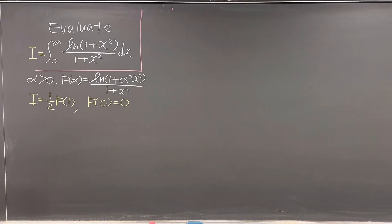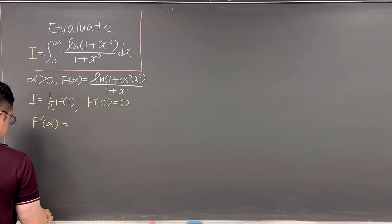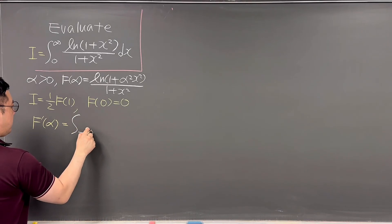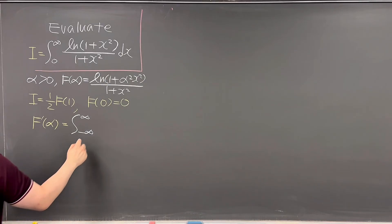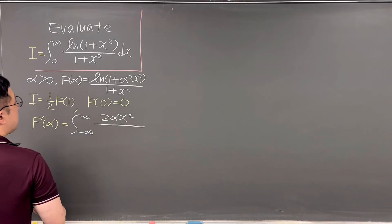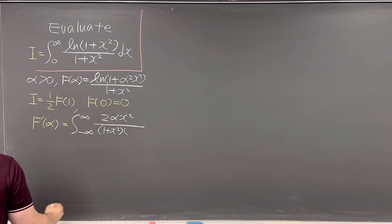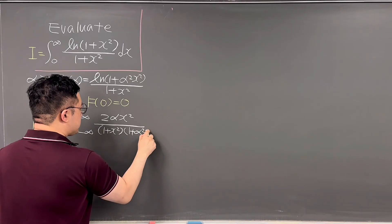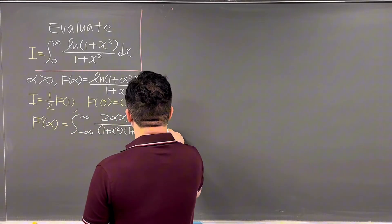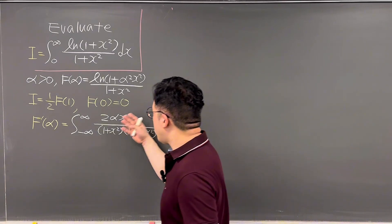We differentiate under the integral sign to get f'(alpha). This equals the integral from negative infinity to infinity of 2alpha·x² divided by (1 + x²)(1 + alpha²x²) dx. Now let's use partial fractions to work on this integrand.